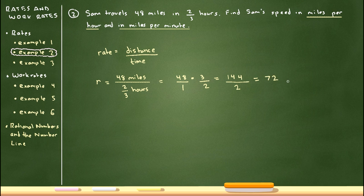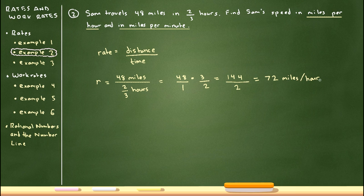It's very important to add the units back on at the end. If you dropped them midway through, make sure you put them back. The units are miles per hour, so Sam's speed is 72 miles per hour. Now we need to find his speed in miles per minute.